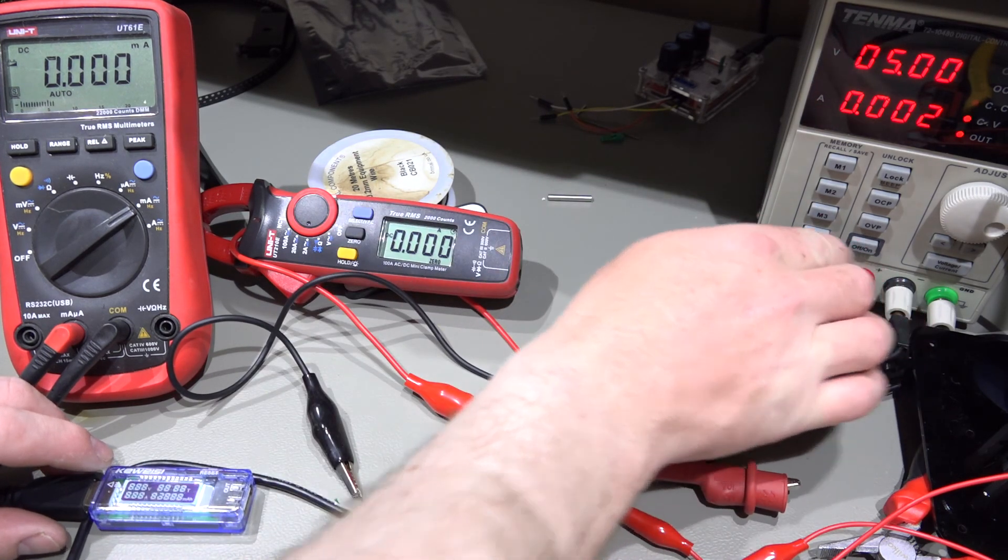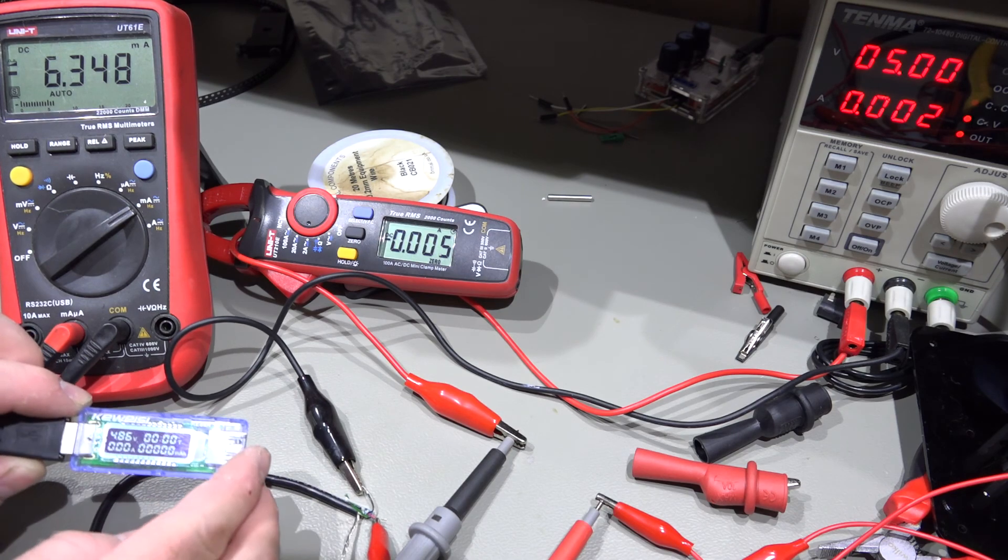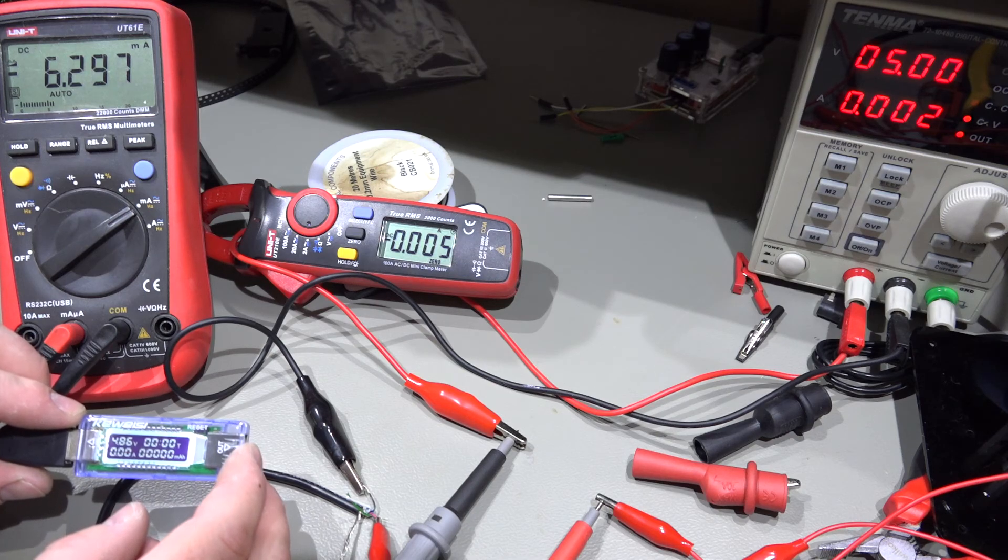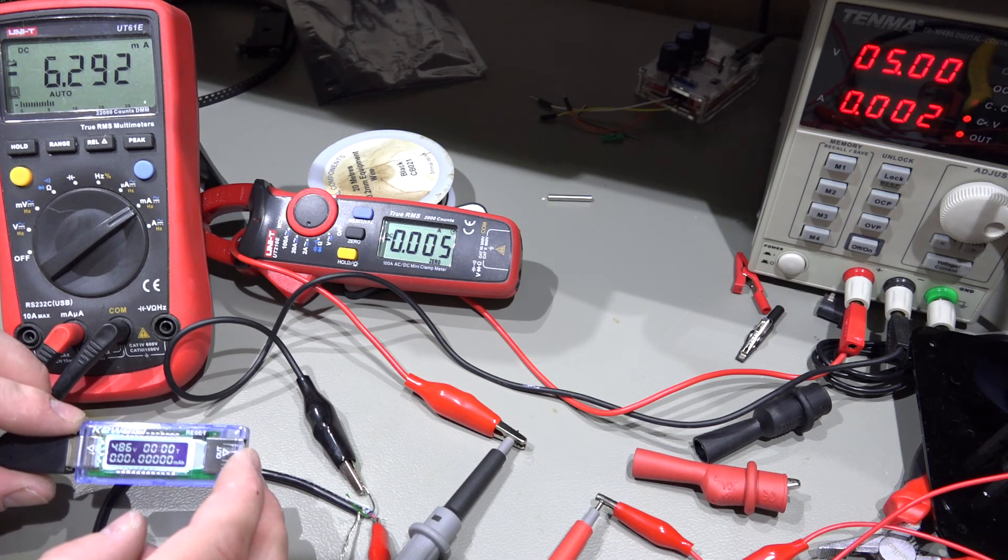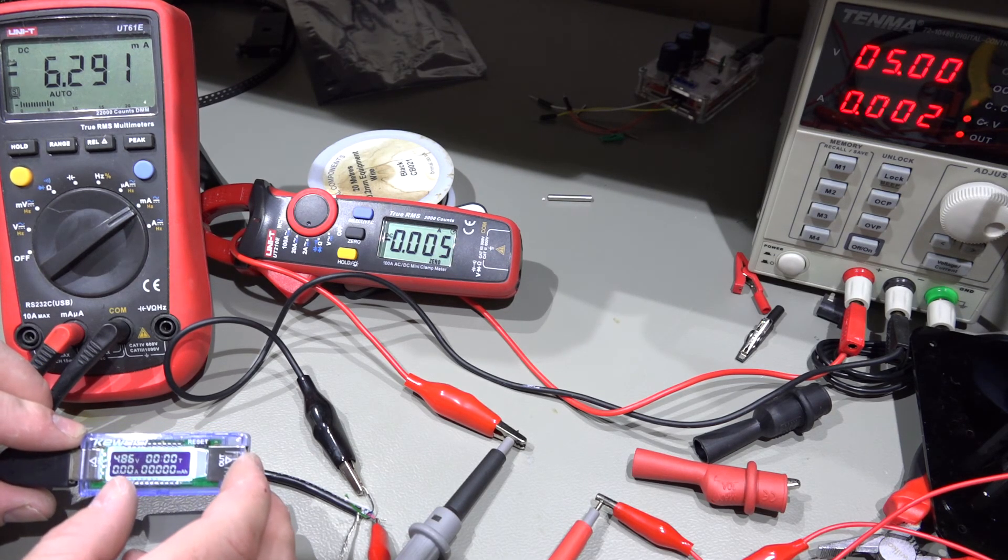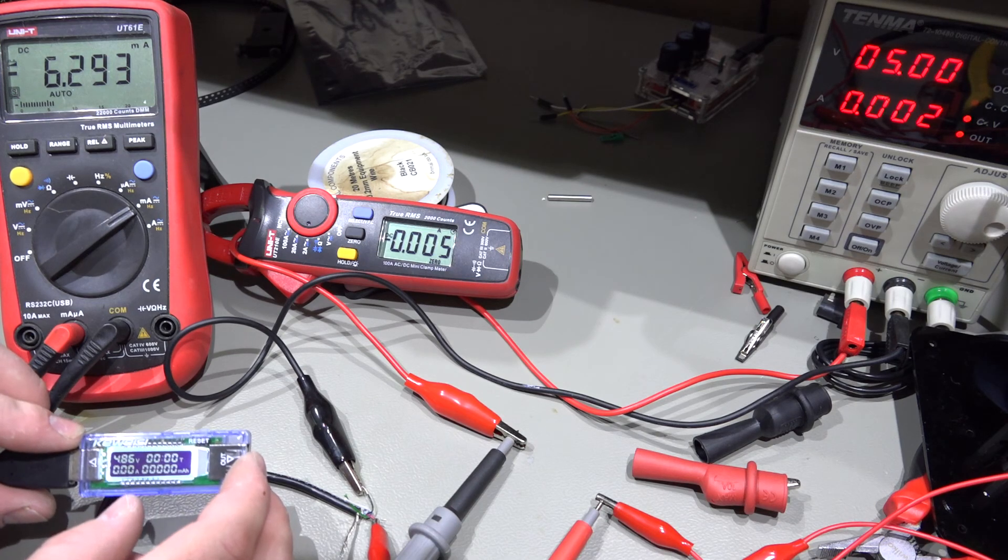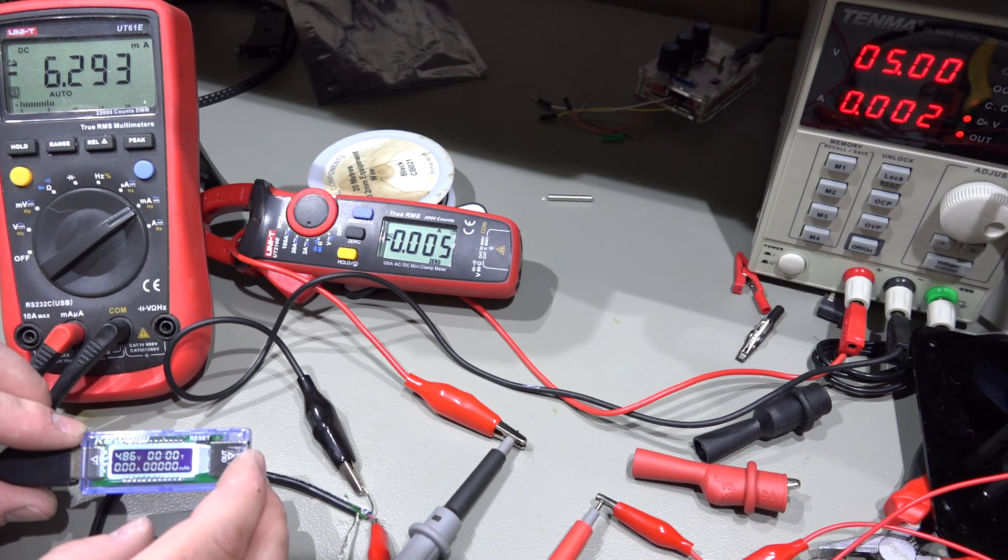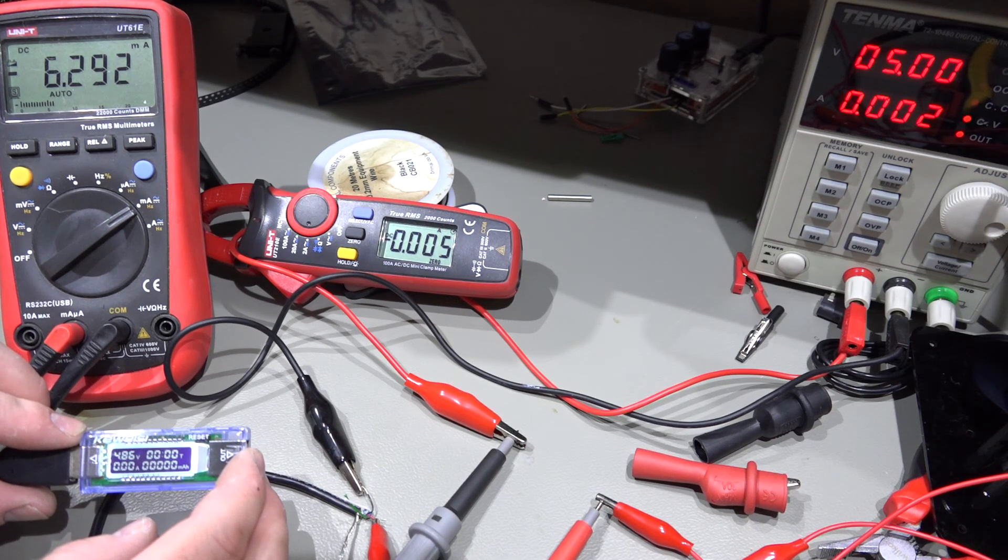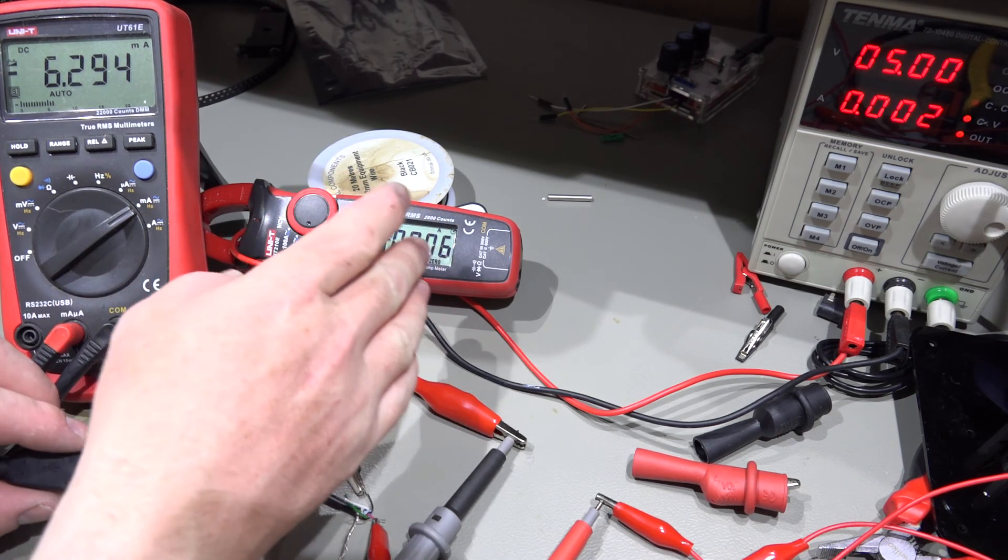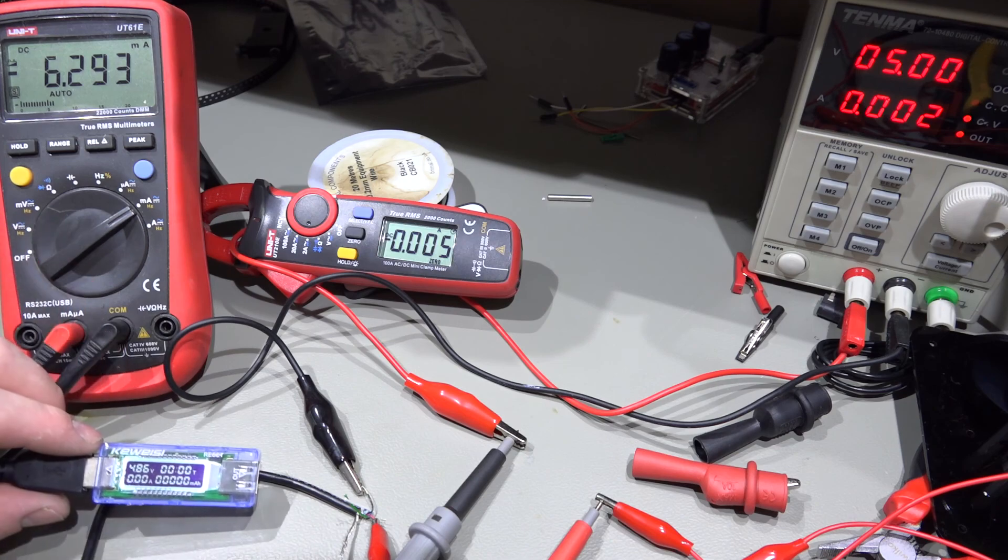If we turn on the power supply we can see this unit has now come on. It's reading 4.86 volts, power supply is saying 5. There's going to be a bit of voltage drop but I have noticed that this does tend to under-read very slightly on the voltage. The current it's drawing is 6.294 milliamps and the clamp meter is saying about 5 milliamps, so that's not going to be highly accurate at all at this kind of low range.